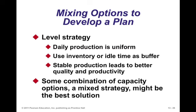Another approach is a level strategy: rather than following the demand pattern, you maintain a steady production rate that allows you to meet the total annual requirements. However, there are some periods where you will carry inventory and some periods with shortages, so you incur inventory and backorder-related costs. You use inventory or idle time as a buffer. Stable production leads to better quality and productivity. A mixed strategy may still be the best solution, but the level strategy provides stability. It's possible to have periods with back orders and periods of excess inventory, so you want the cost of that strategy to be reasonable.